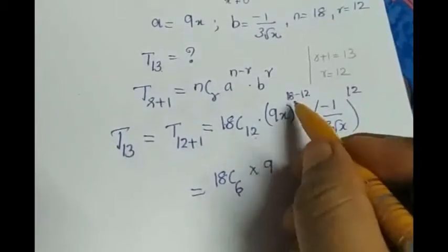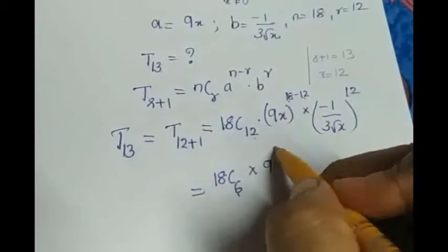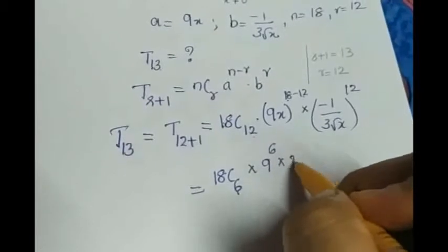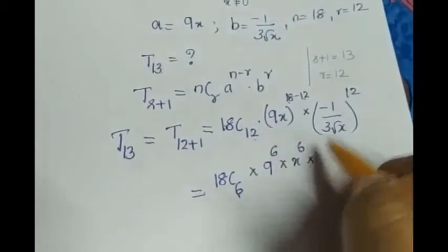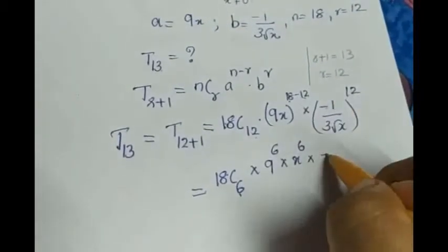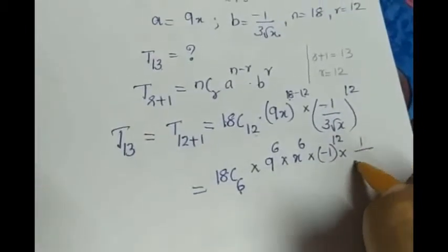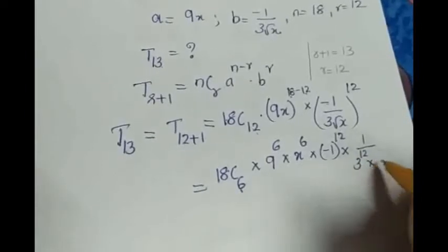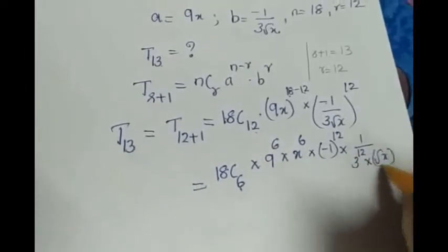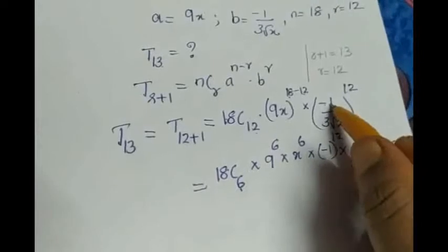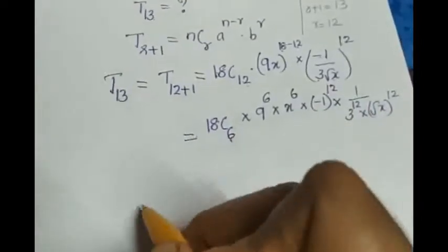Into 9 raised to here also 18 minus 12 gives you the value 6. Into x^6 into (-1)^12. Negative 1 raised to 12 we know it as positive. Still, we will write the value. Again, (1/3)^12 into (√x)^12. I give 12 to minus 1, 3, and also root x.